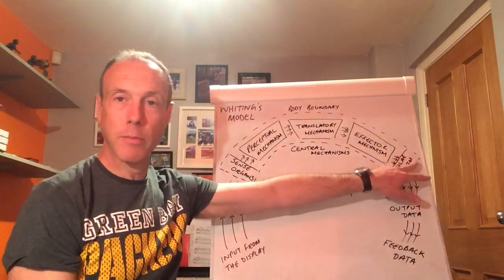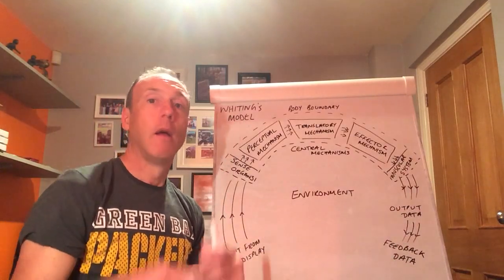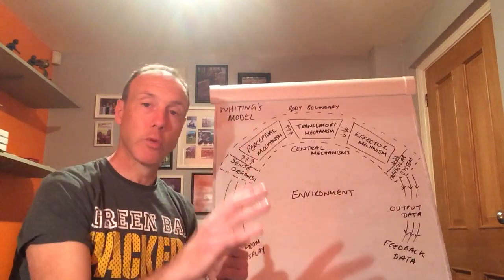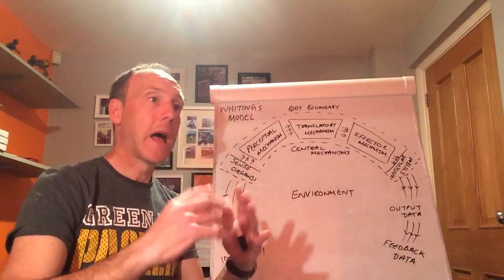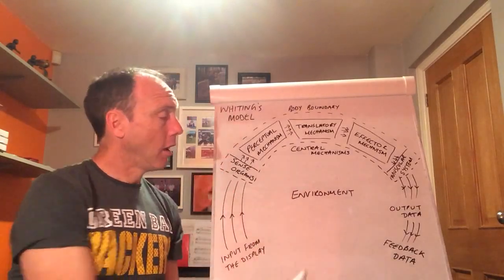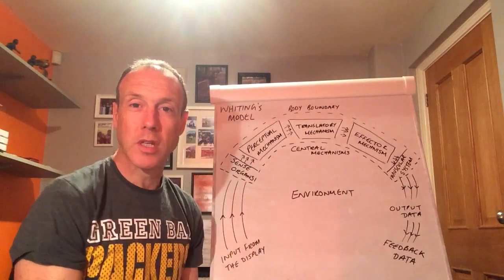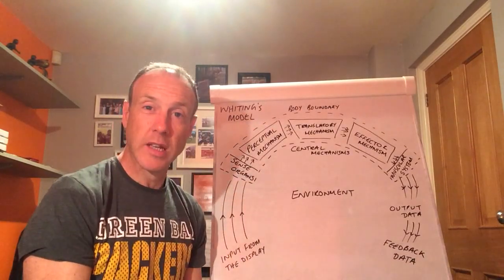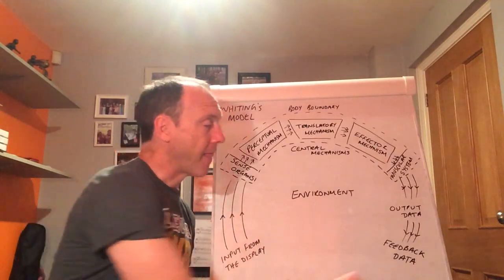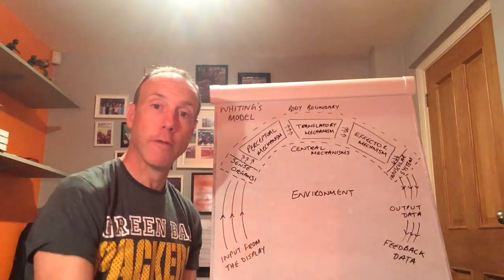So the muscular system puts it into effect and then we have an output data. So output data is simply what's happened, the result of it. So what do we see? What has happened as a result of our motor program, of our movement? And then that is all tied up at the bottom with feedback data. Was it successful? Did it fail? Was it the correct response? Was it the incorrect response? And that feedback then obviously will inform the long-term memory in the future.